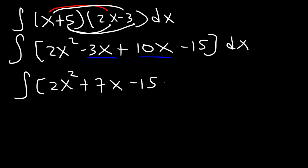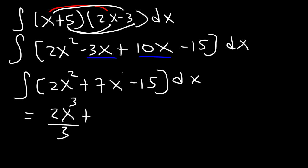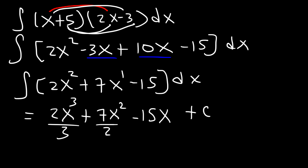So now we can find the antiderivative. The antiderivative of 2x squared is 2x to the third power divided by 3. For x to the first power, it's going to be x squared over 2. And the antiderivative of any constant: the antiderivative of negative 15 is negative 15x. Plus c. And that's it for this problem.